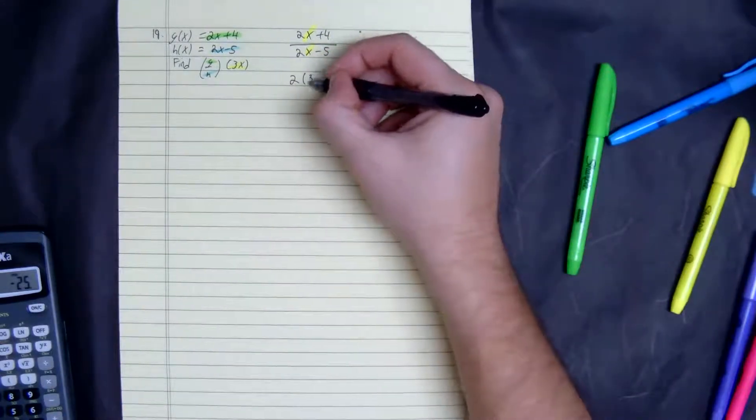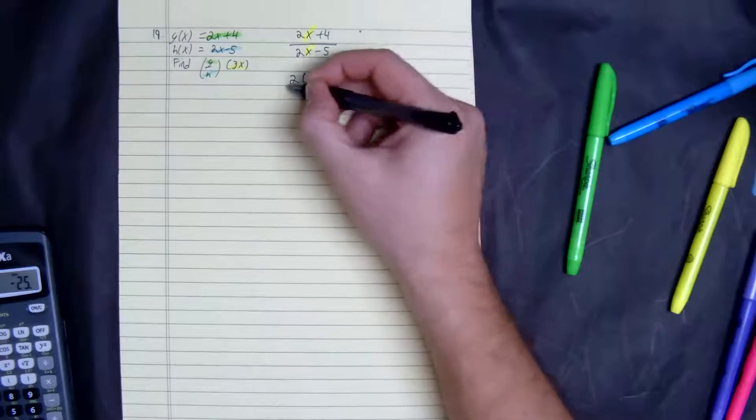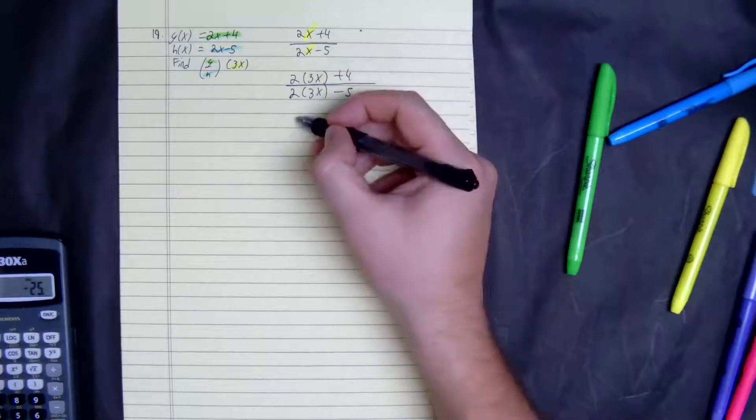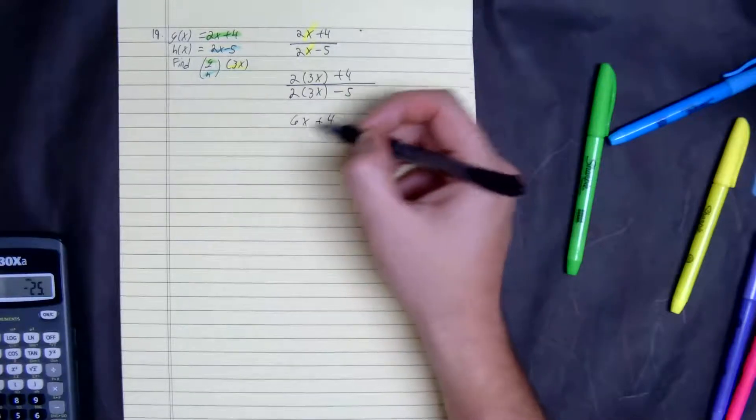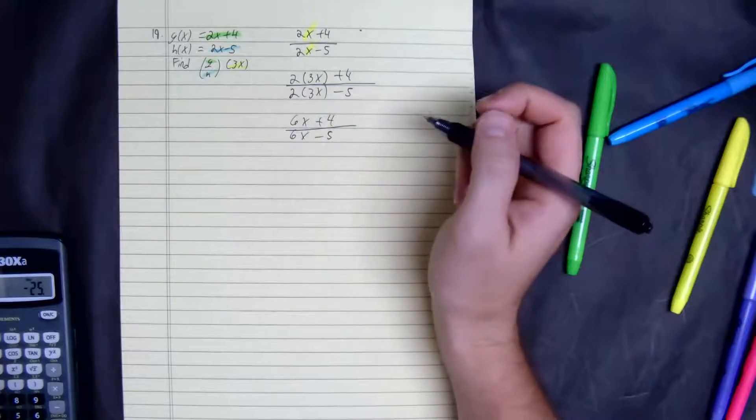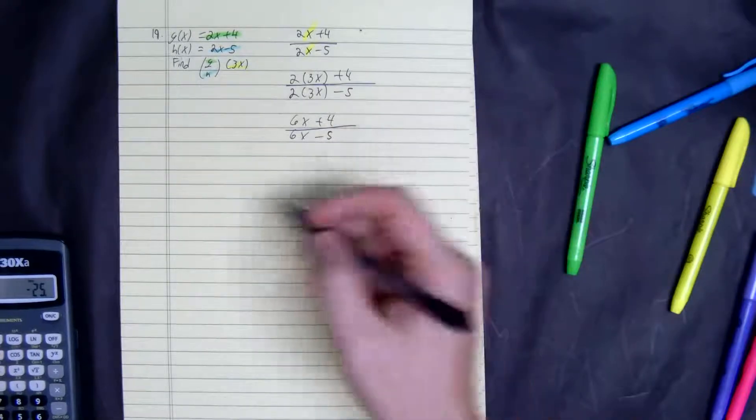So 2 times 3x plus 4, and then 2 times 3x minus 5. We get 6x plus 4 over 6x minus 5. That would be our answer. Domain constraint: